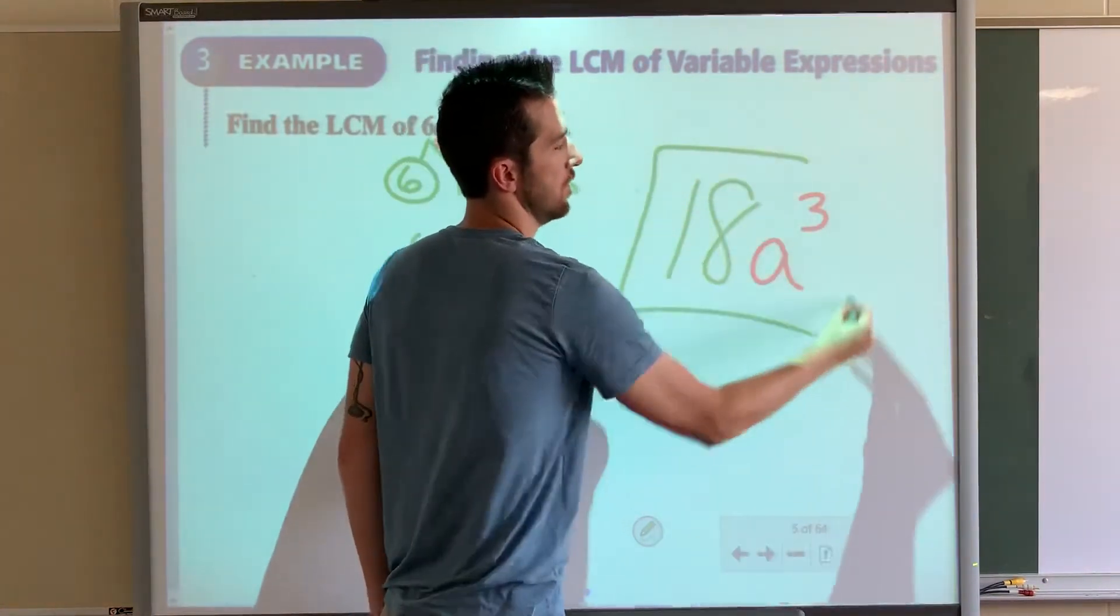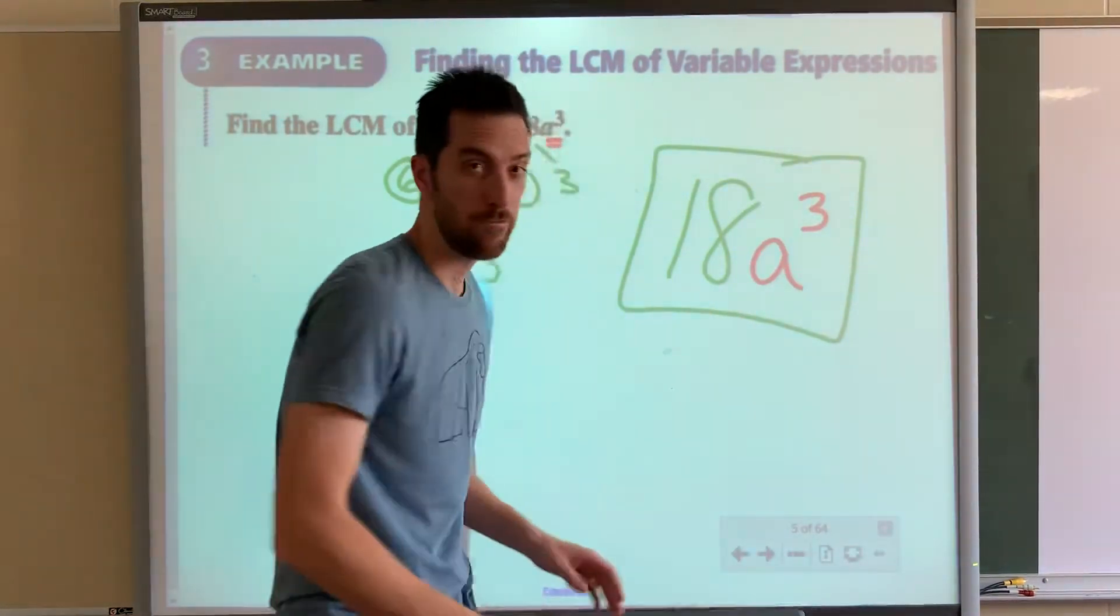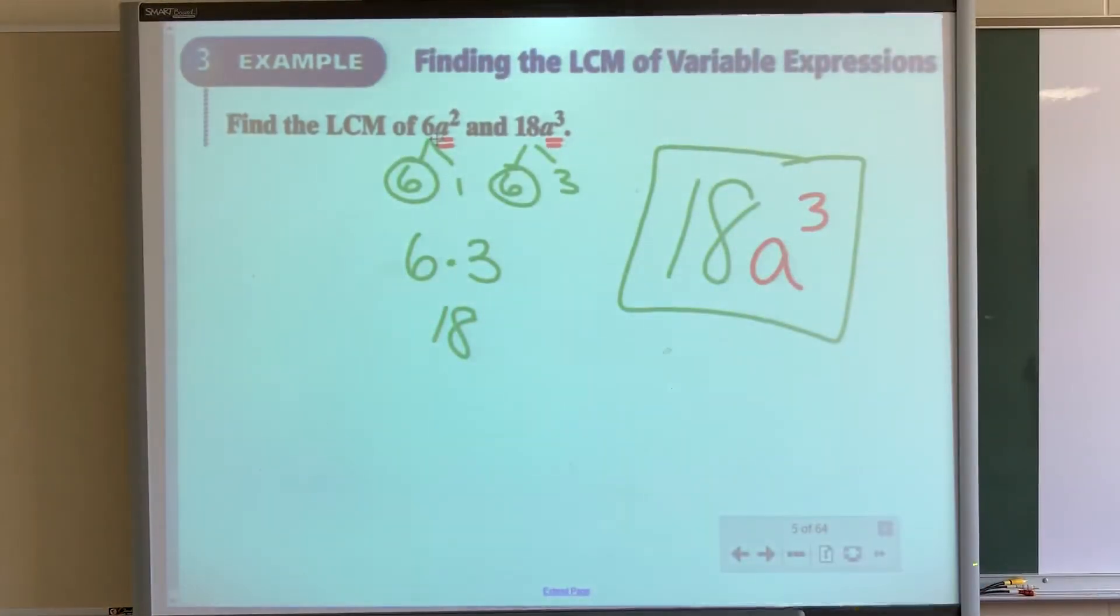18a to the third. That's our least common multiple. Remember, variables, you go with the highest one for everything.